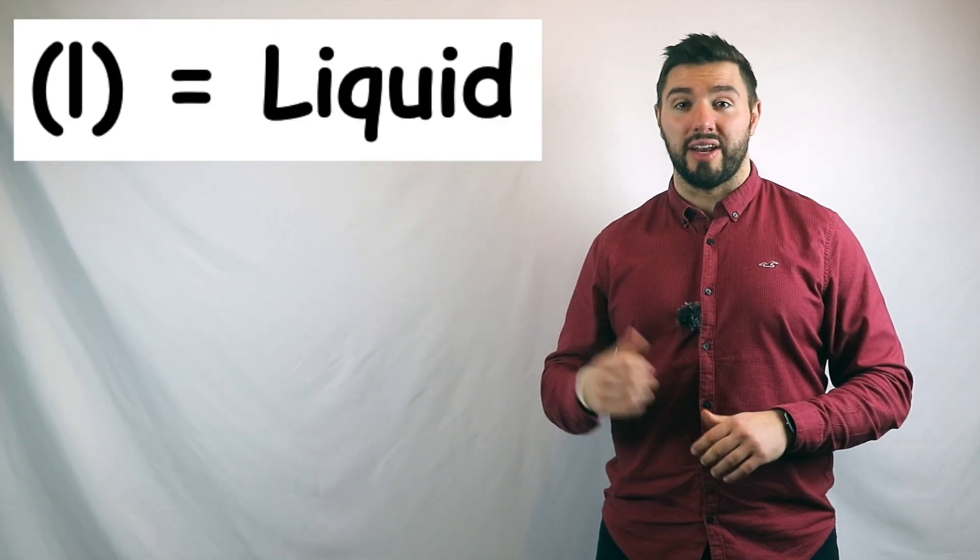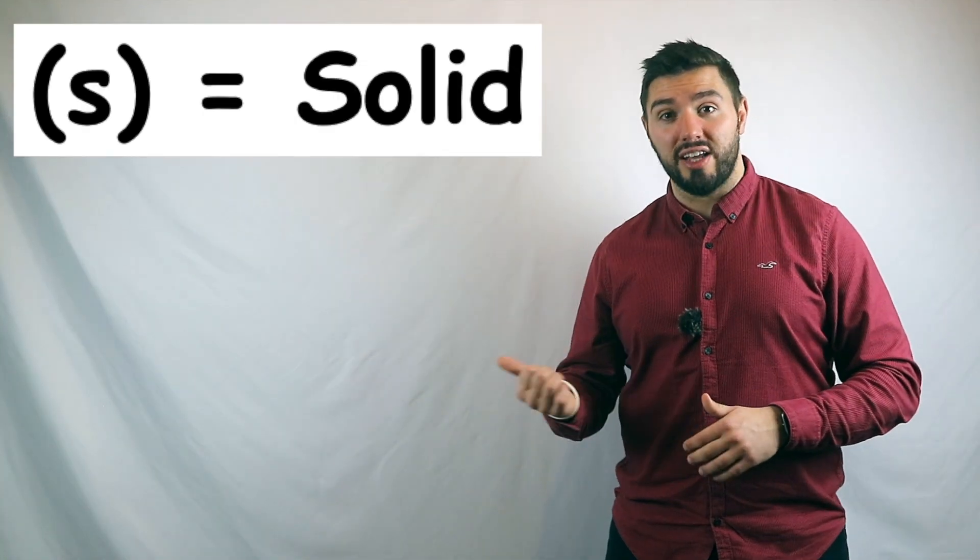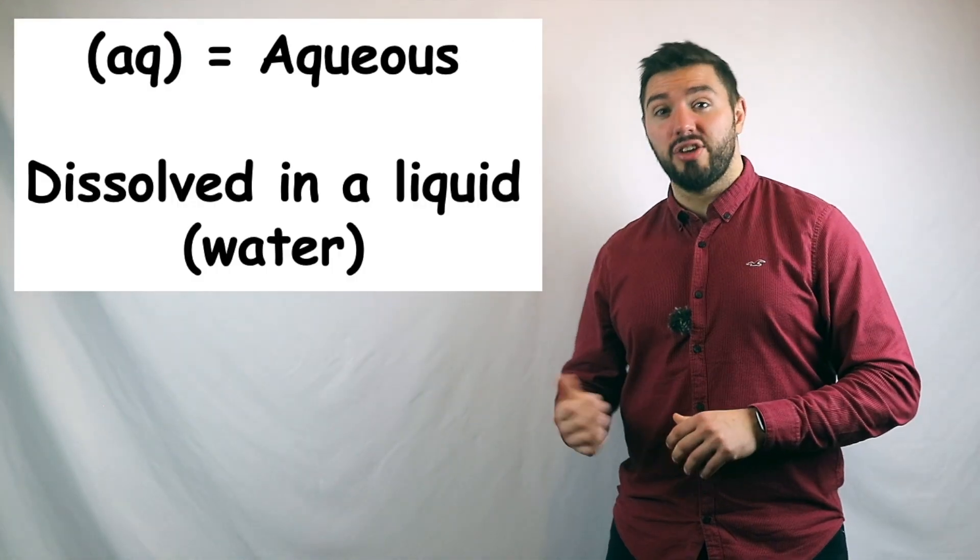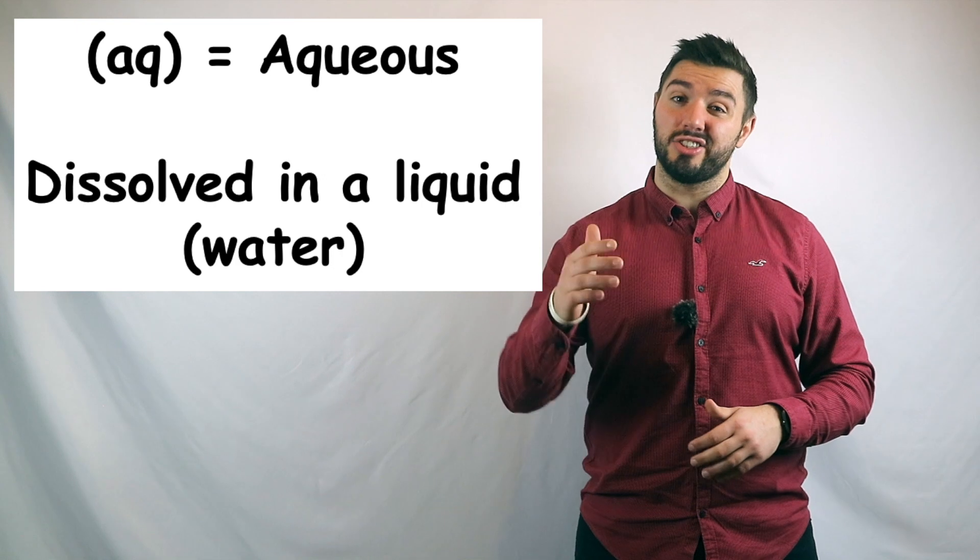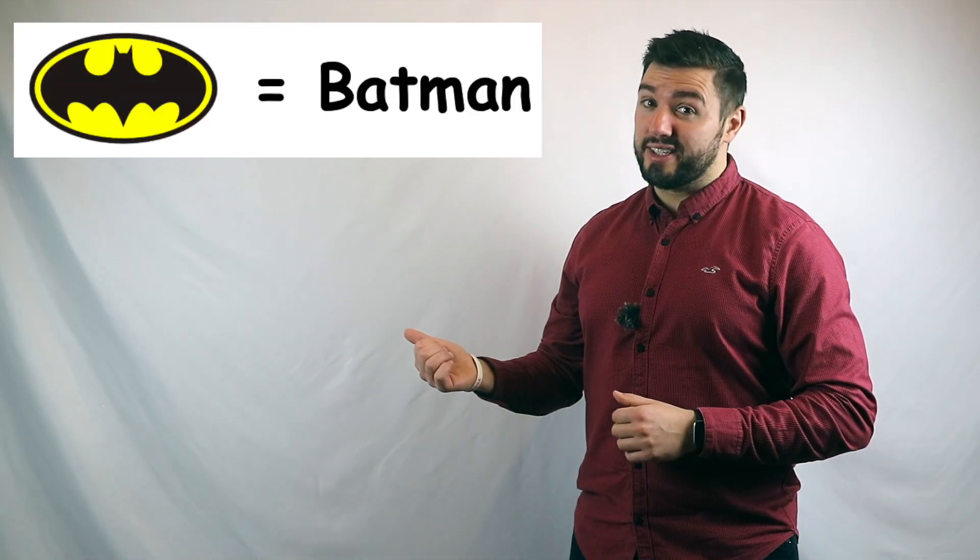You've got liquids, which have an L. You've got gases, which have got a G. You've got solids, which have got an S. And you've got AQ, which stands for aqueous. It means something is dissolved in another liquid.